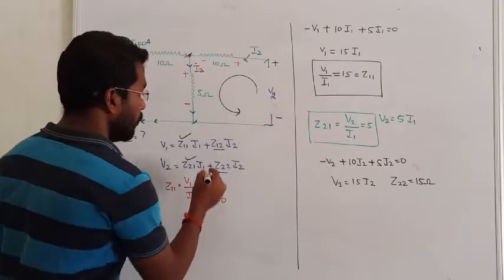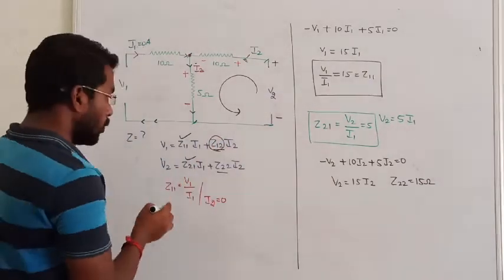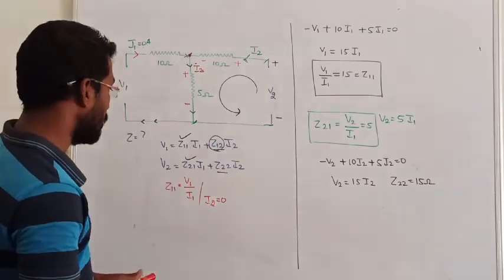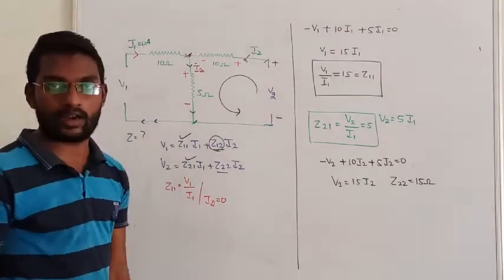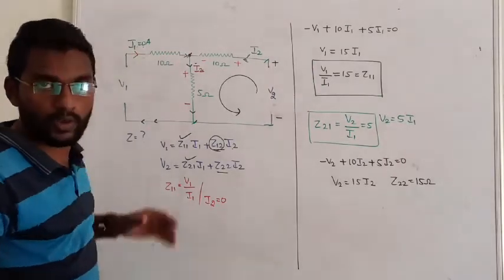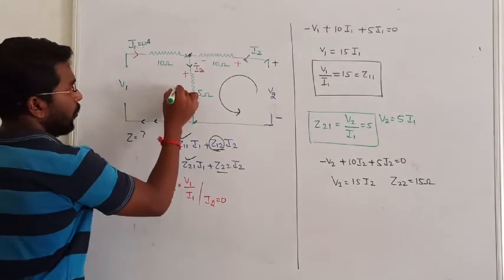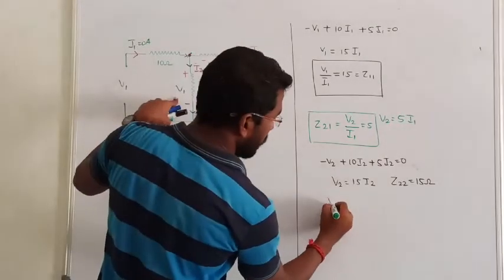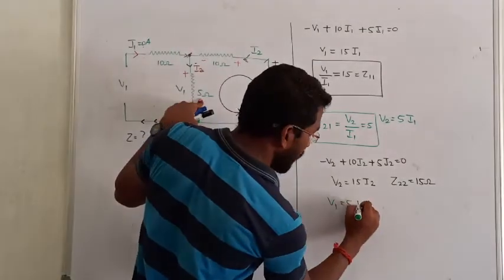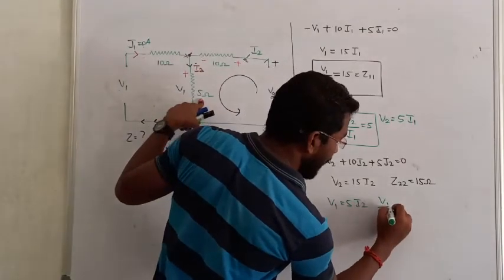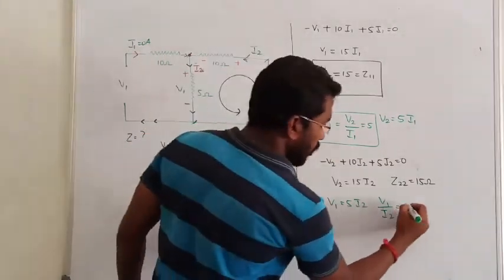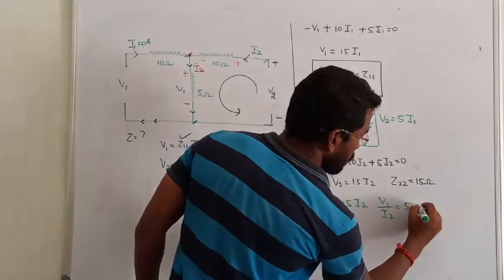Similarly for Z12, which is V1 divided by I2 with I1 = 0. Observing the circuit, since the input port is open circuit, the voltage V1 appears across the 5-ohm resistor due to current I2. So V1 = 5·I2, giving V1 by I2 = 5 ohms. Therefore Z12 = 5 ohms.